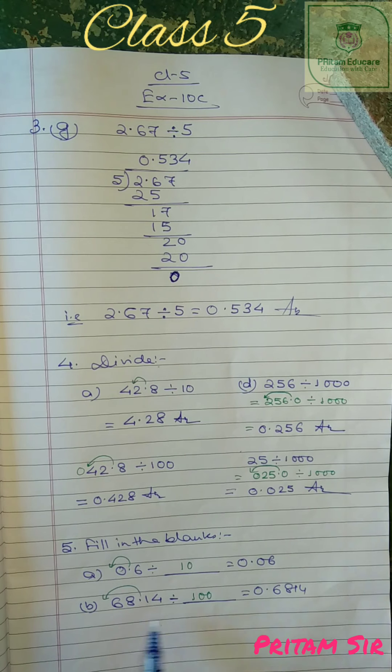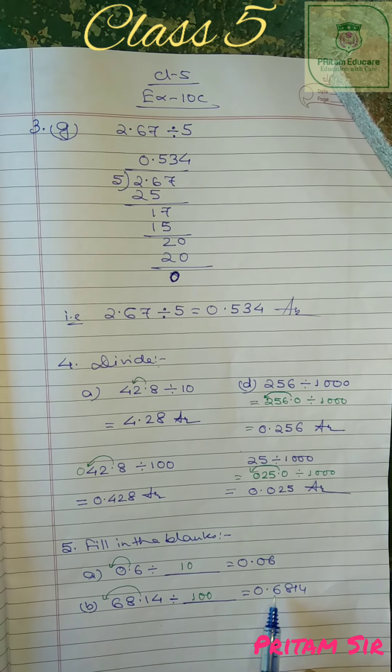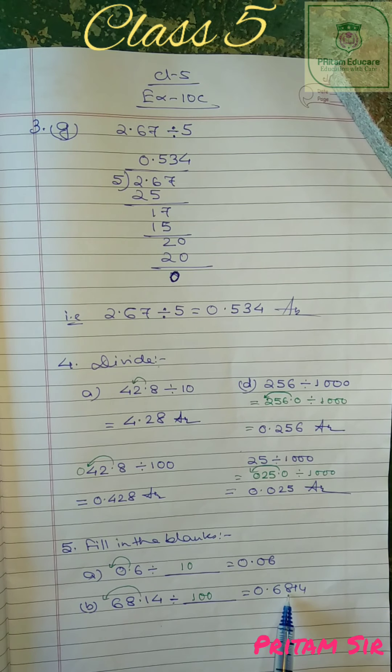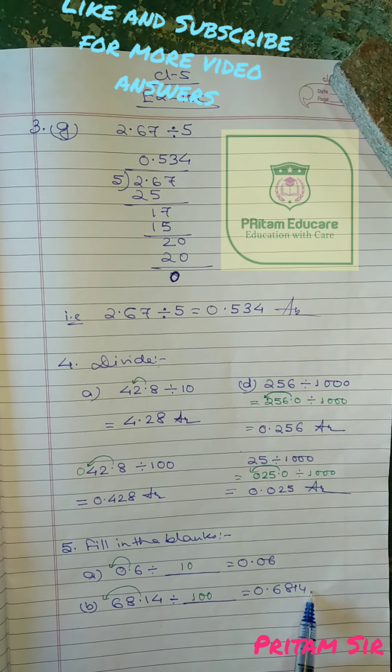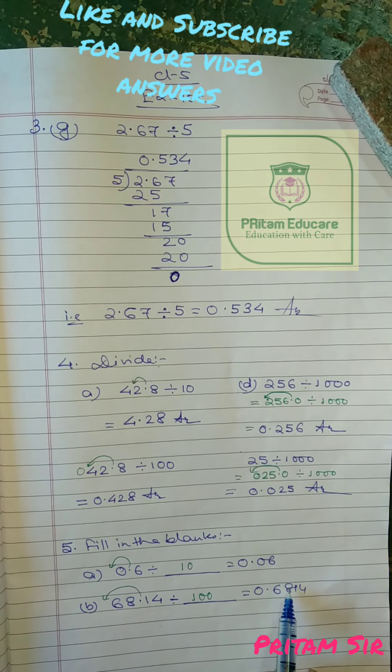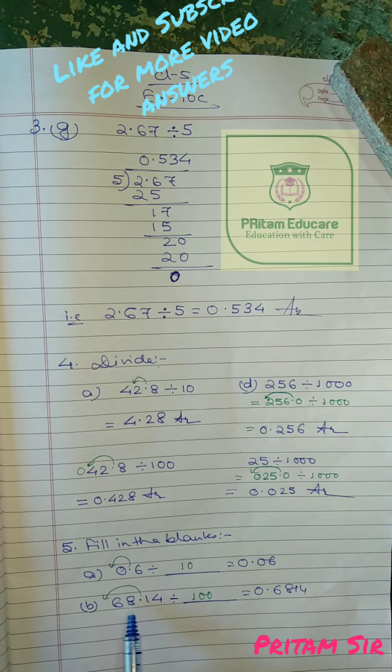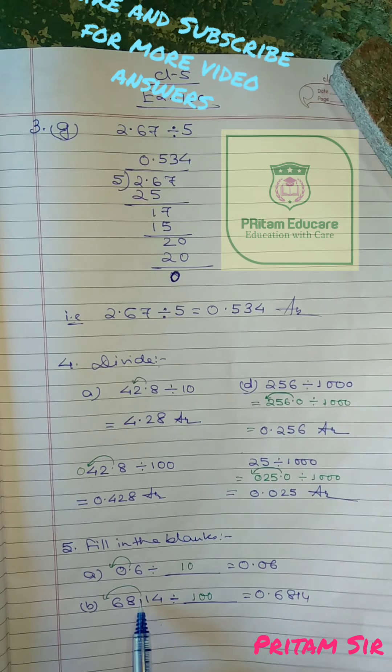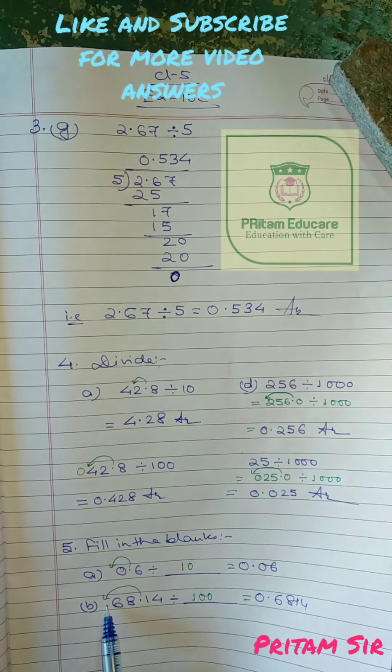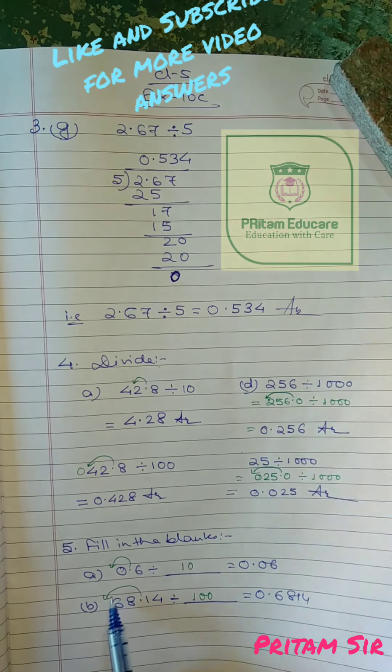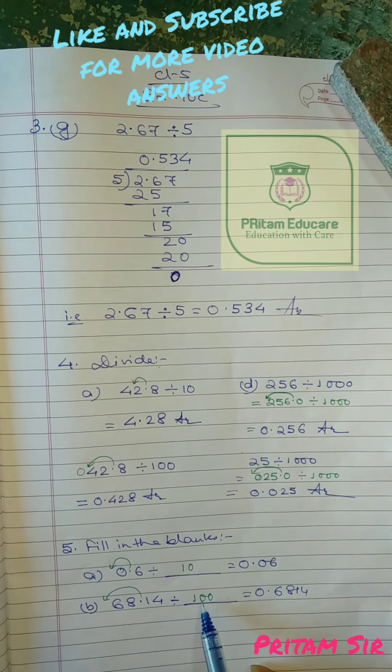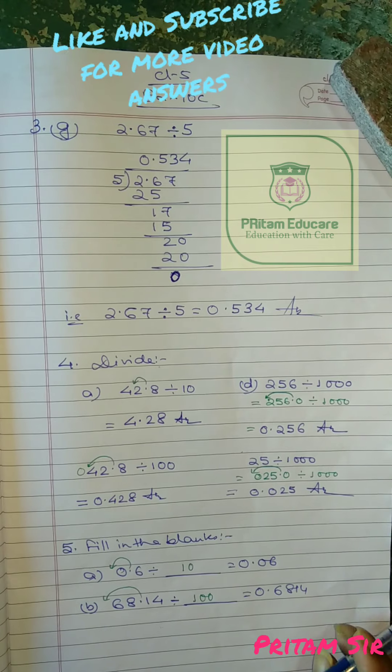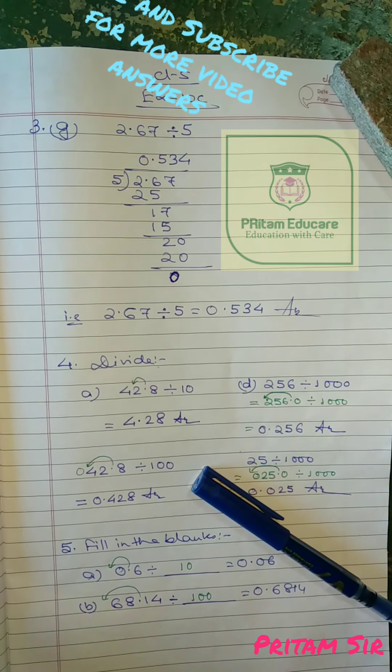Here you see 68.14 divided by blank equal to 0.6814. We have 68.14, here 6814. That means the point has come from this place to before 6. That means how many digits it has shifted? Two digits shifted. So we have taken two zeros. That means 100. So the rest of the questions you will do by yourself.